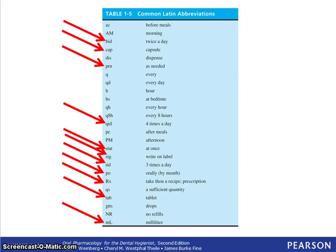PO means per os, or by mouth, orally. RX stands for take thou a recipe, or prescription. TAB is short for tablet. And milliliter is abbreviated with a small m and a capital L.